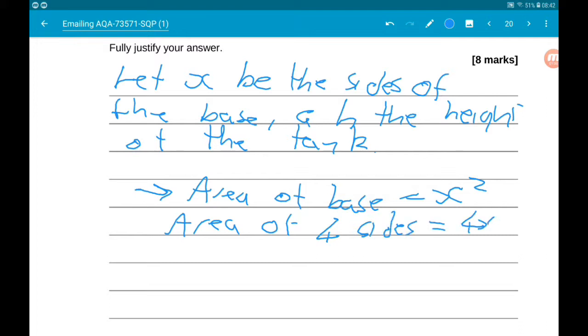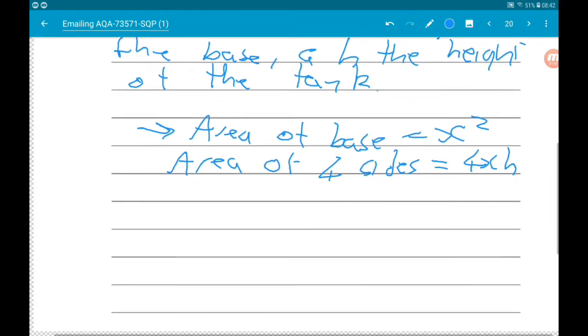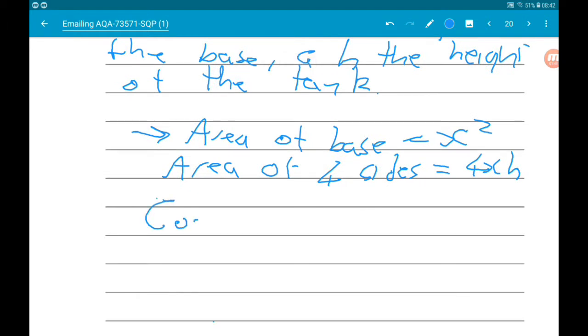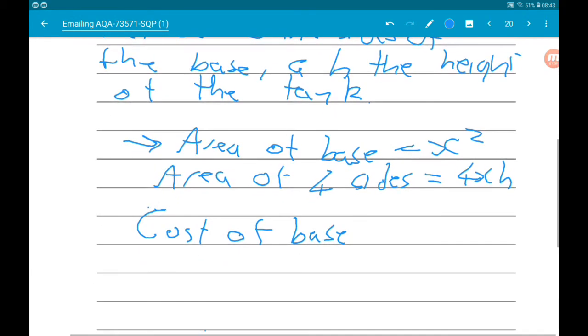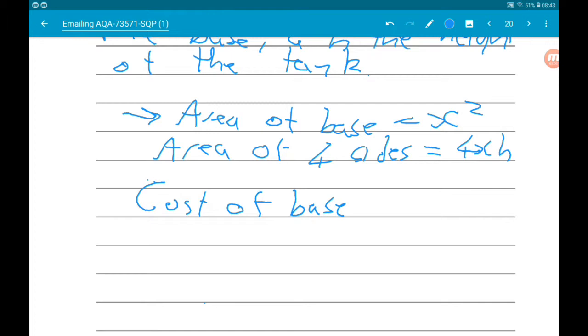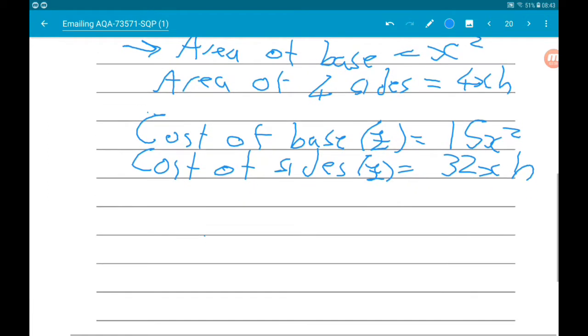From that we know the cost of the base is £15 per meter squared, so the cost of the base in pounds is 15x squared. And the cost of the sides in pounds is 8 times 4xh, so 32xh.